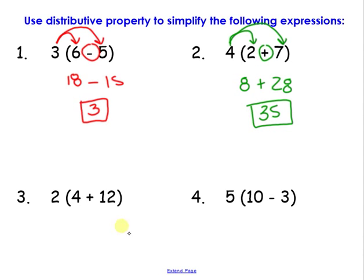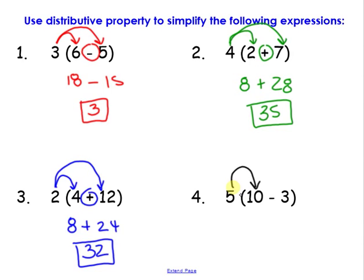Let's try another one. 4 times 8 is 32. And last but not least, 5 times 10 is 50, bring down the operation which is subtraction, and 5 times 3 is 15, and 50 minus 15 is going to be 35.